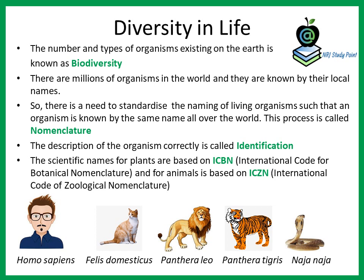Scientific names are given to organisms on the basis of a code. Plants are given scientific names on the basis of the International Code for Botanical Nomenclature, and animals are given a scientific name on the basis of the International Code of Zoological Nomenclature. For example, humans are known as Homo sapiens, cat as Felis domesticus, lion as Panthera leo, tiger as Panthera tigris, and cobra as Naja naja.